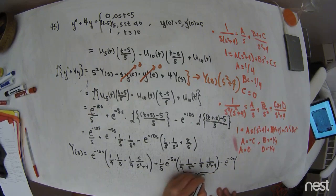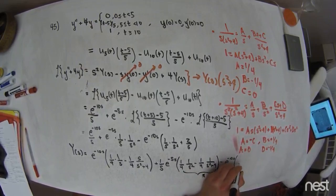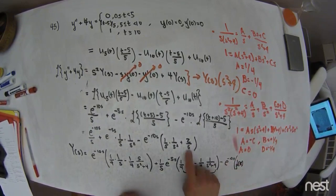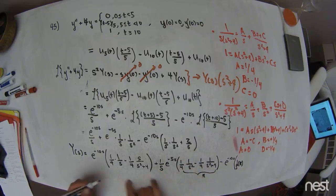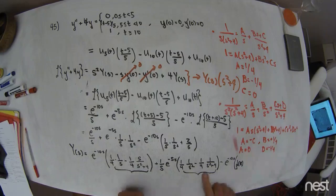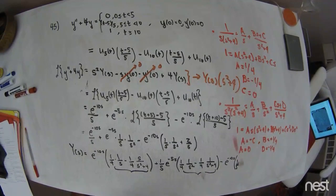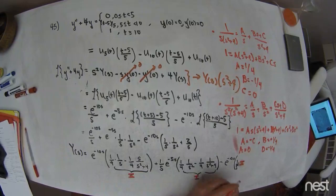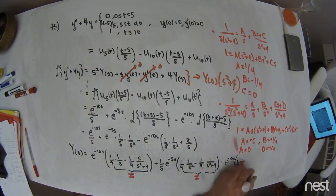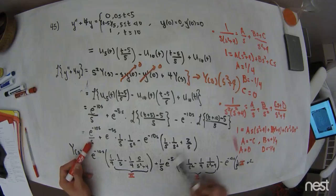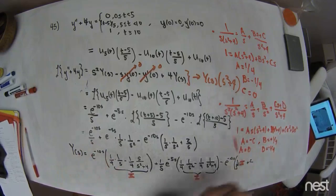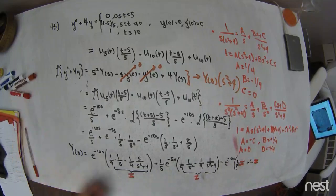Let me label these grouped expressions. I'll call the first partial fraction result Roman numeral I, and the second Roman numeral II. So Y(s) contains: e^(−10s)·(Roman I), plus (1/5)·e^(−5s)·(Roman II), plus 2·e^(−10s)·(Roman II), since the 2/s term hitting 1/(s²+4) corresponds to Roman II as well.